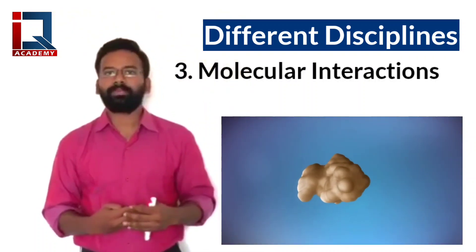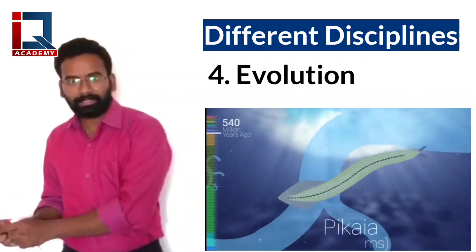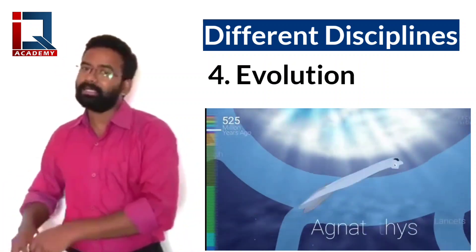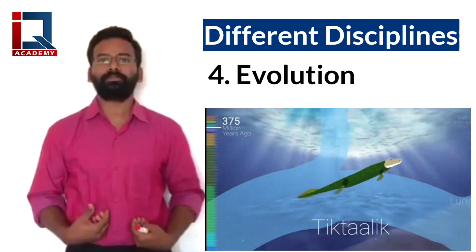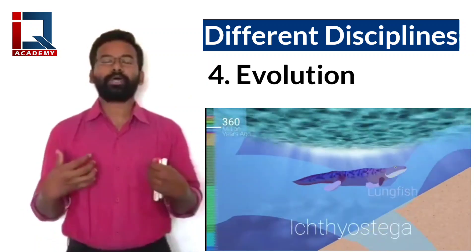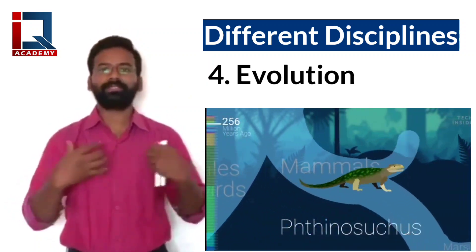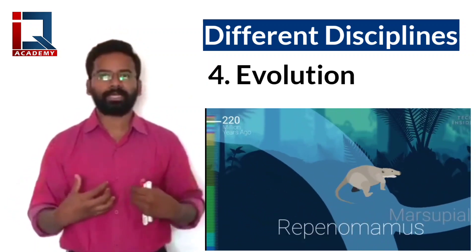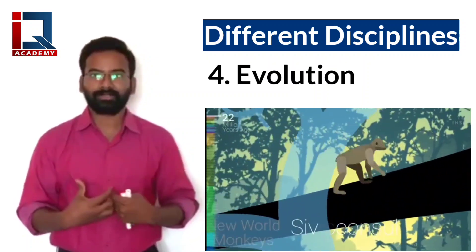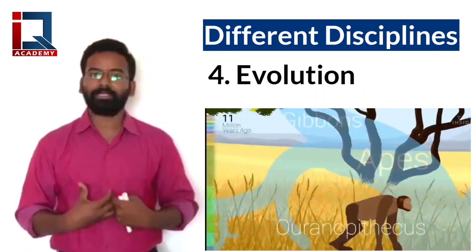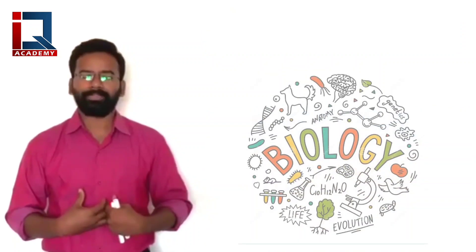The fourth concept is evolution — how a single bacteria which had nothing in it has transformed into a complete human being, which is a very complex structure where you have hundreds of cells, thousands of nerves, and billions of interactions taking place in the body.